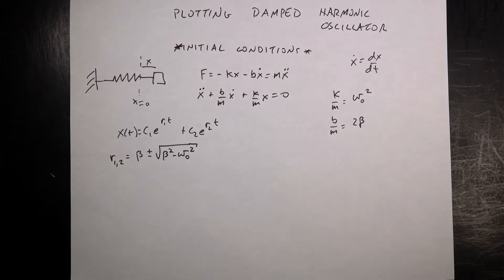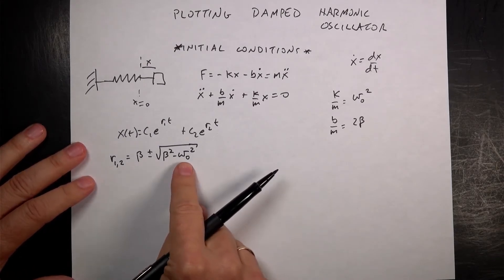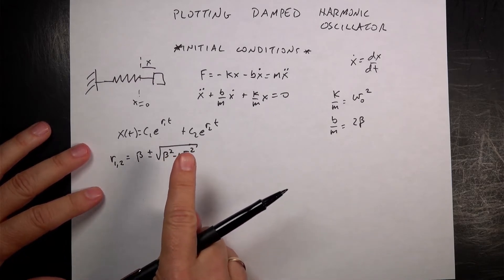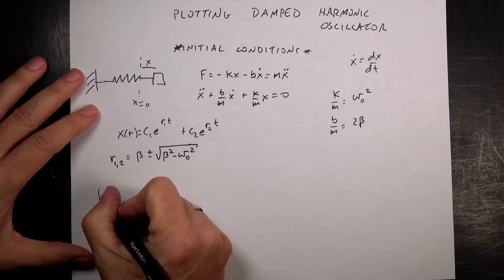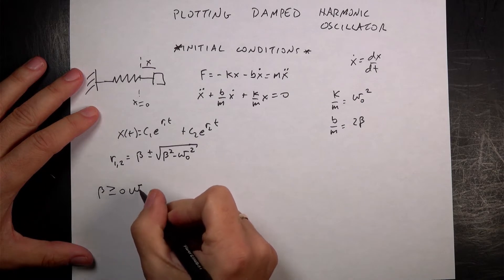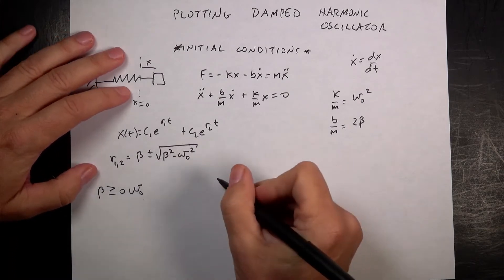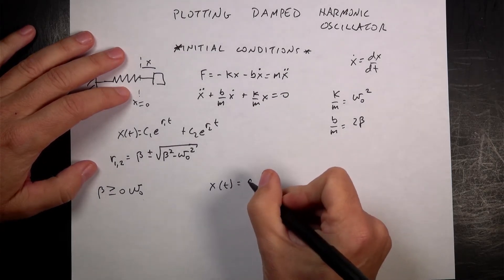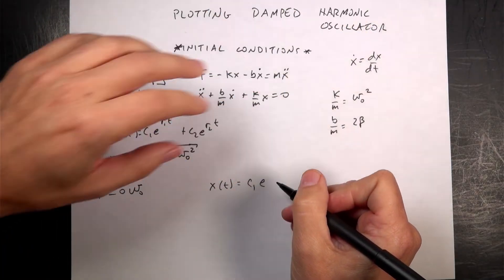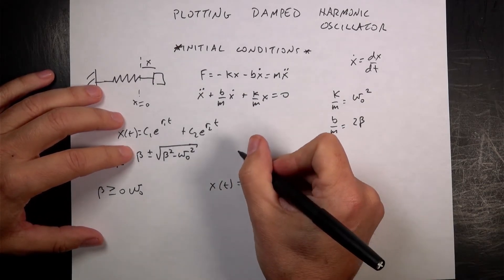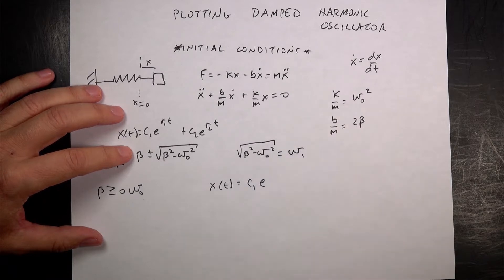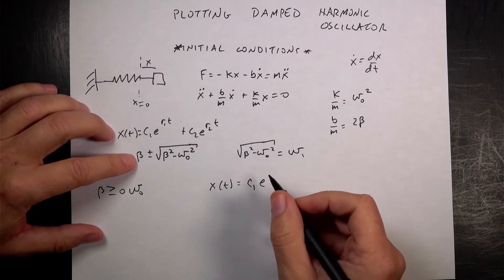Now we have to consider whether that square root is imaginary. Let's deal with the case where beta is greater than or equal to omega naught, so the term under the square root is not negative. Let's call √(β² − ω₀²) = ω₁, just a constant. So x(t) = c₁e^(−β + ω₁)t + c₂e^(−β − ω₁)t — exponentially decaying real terms.